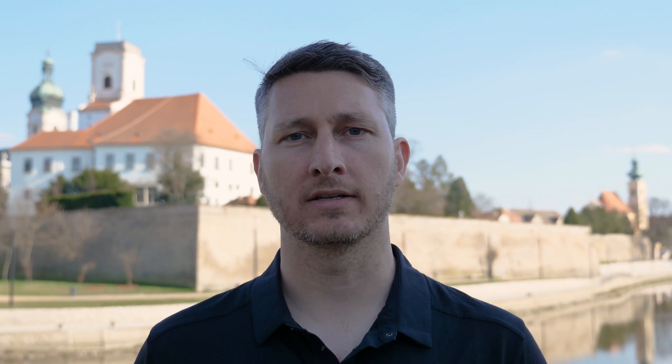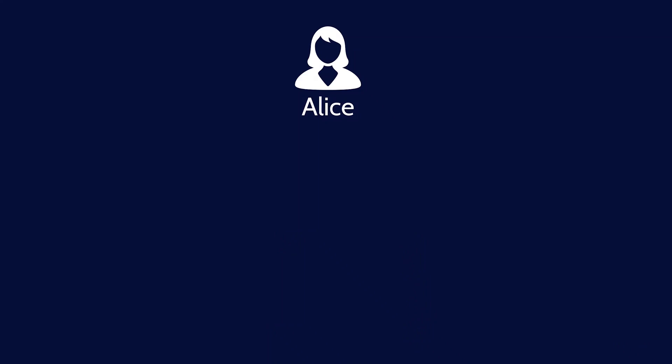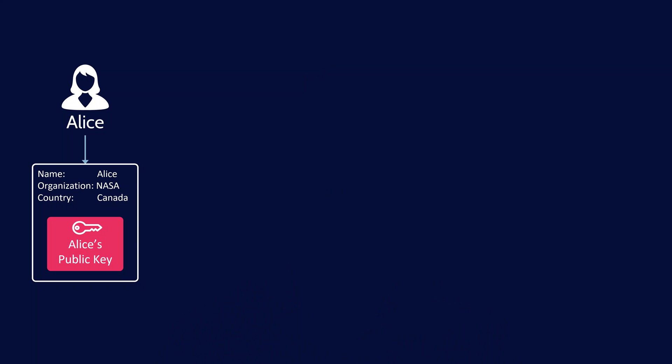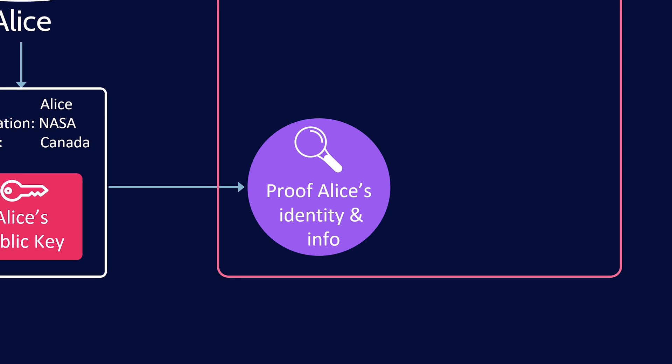Digital certificates bind an owner to their public key — they allow us to verify who a public key belongs to. Let's look at the process used to create a digital certificate, using Alice as an example. She wants to obtain a digital certificate that anyone in the world would trust. She begins by providing her name and a copy of her public key to a trusted certificate authority. The CA first proofs her identity and verifies her information.